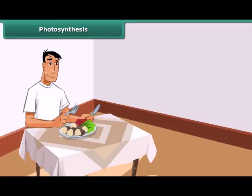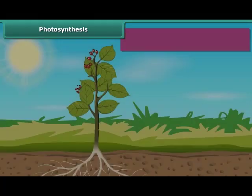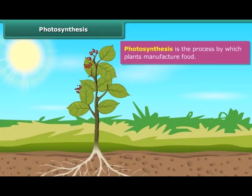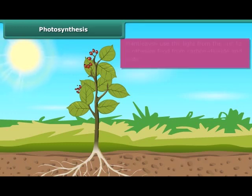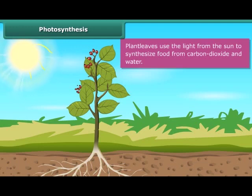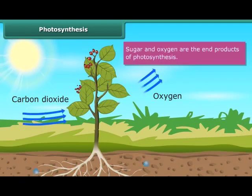Just as human beings need food to survive, plants also require food to live. Photosynthesis is the process by which plants manufacture food. The word photosynthesis is derived from two words: photo, which means light, and synthesis, which means preparation. Thus, photosynthesis means producing with the help of light. In this process, plant leaves use the light from the sun to synthesize food from carbon dioxide and water. Sugar and oxygen are the end products of photosynthesis.